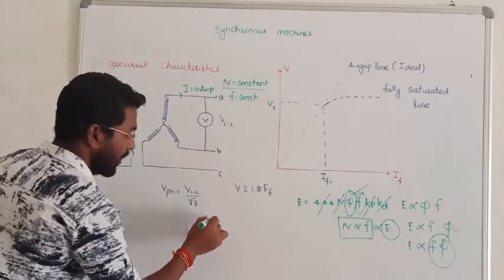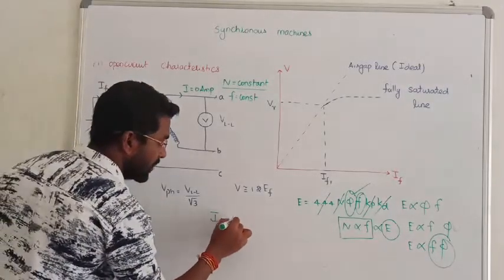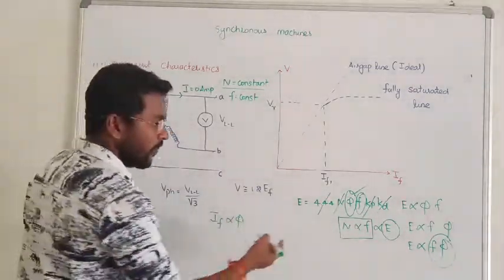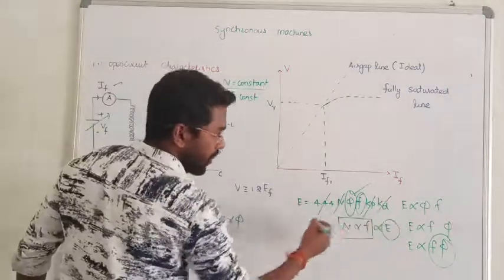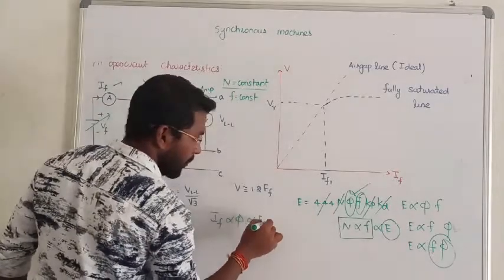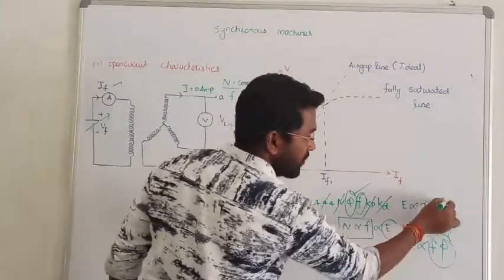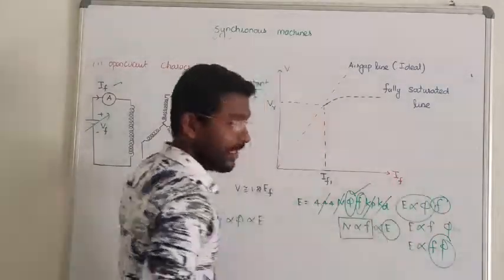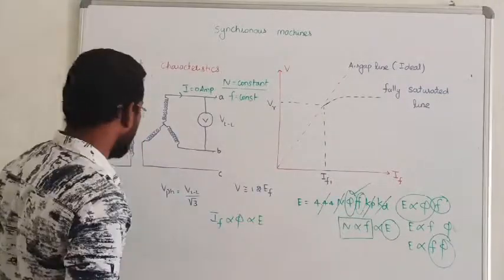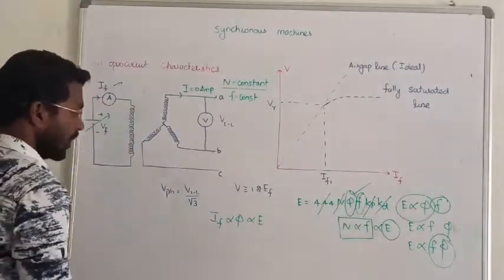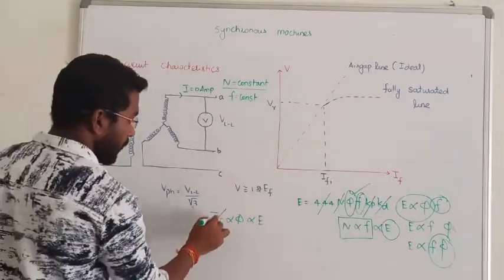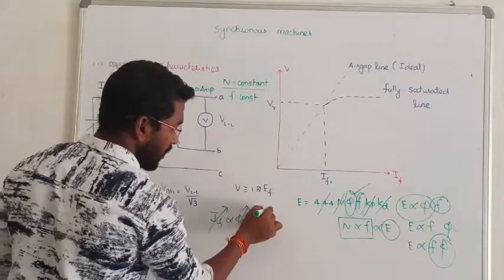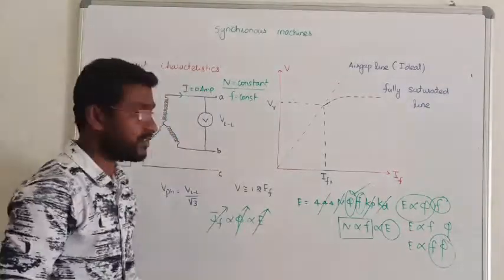If we increase the field current, we know that field current is directly proportional to flux. Flux is directly proportional to induced EMF when frequency is maintained as constant. So by increasing field current, we can vary the flux and the induced EMF will also increase linearly.